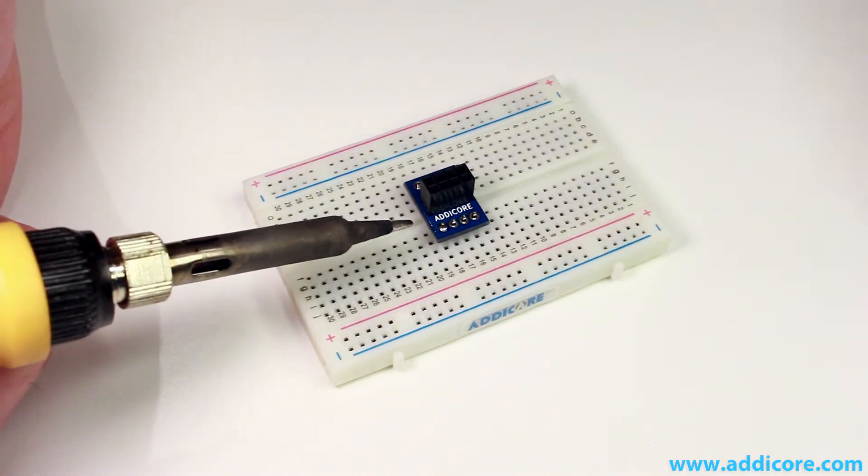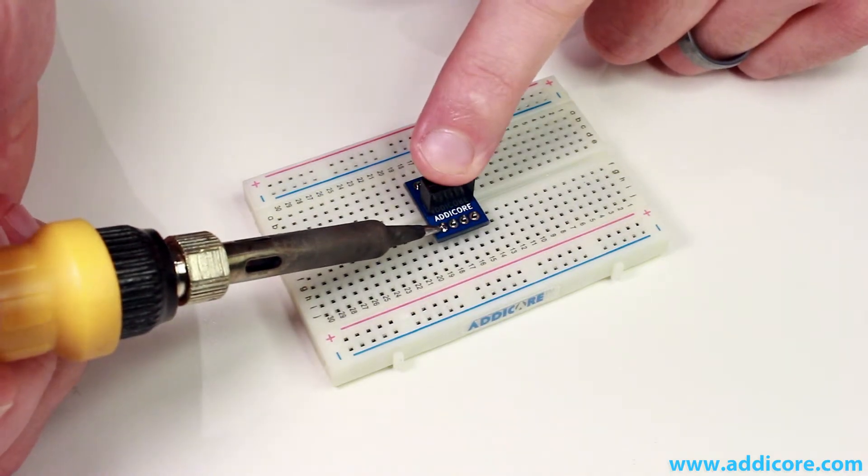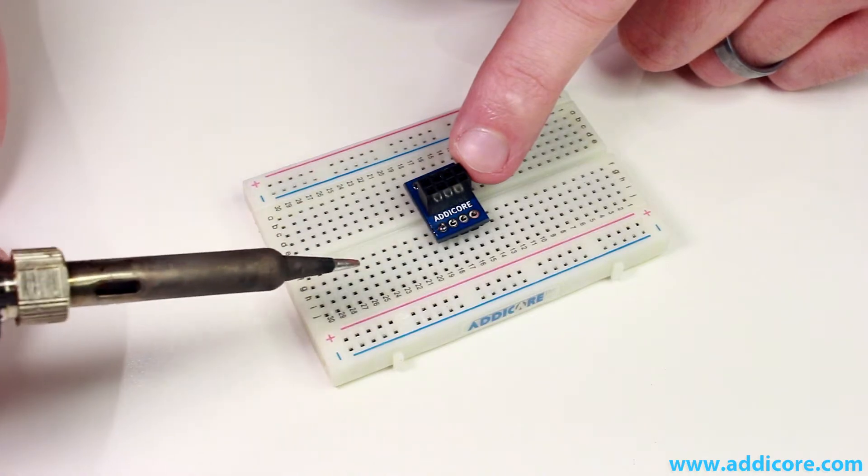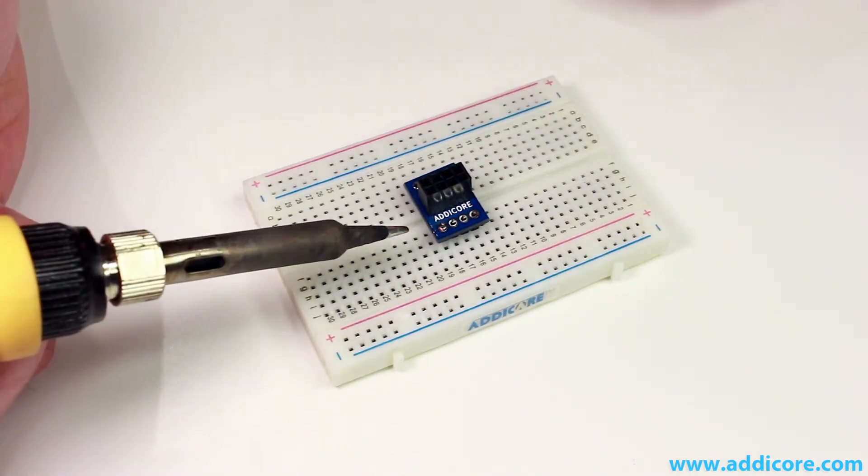Now we'll go ahead and we'll start to solder these header pins to the adapter. And then just to make sure that everything is square, I'll reflow that joint and I'll push on it with my finger. And that way, for instance, let's say that we had soldered this joint and the board was at an angle.